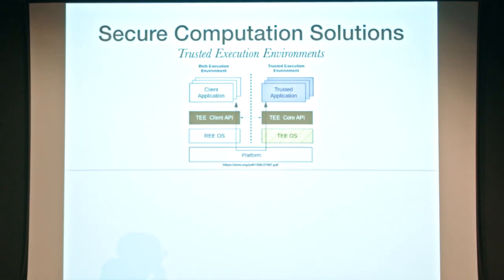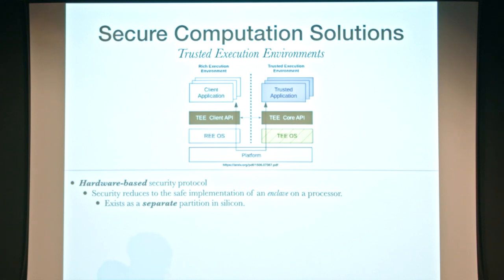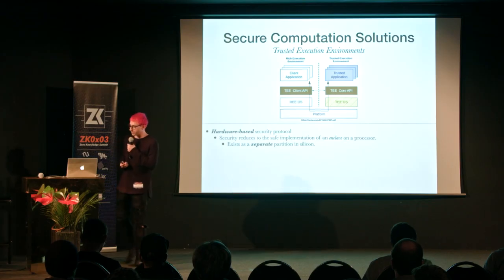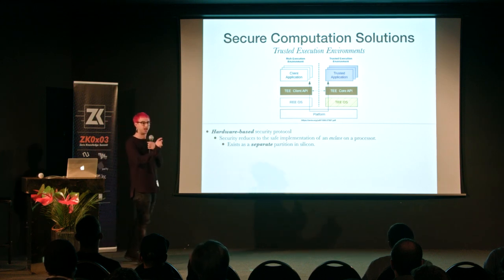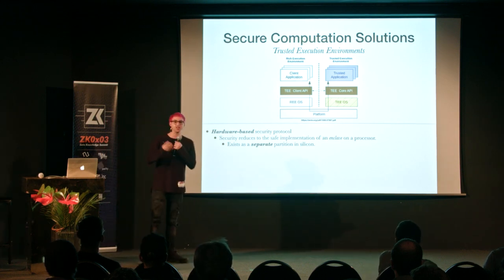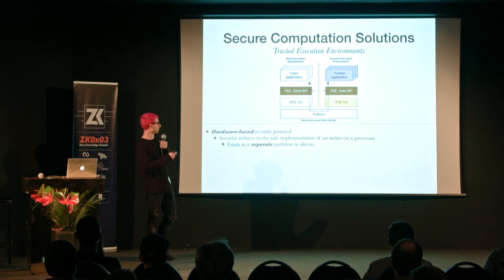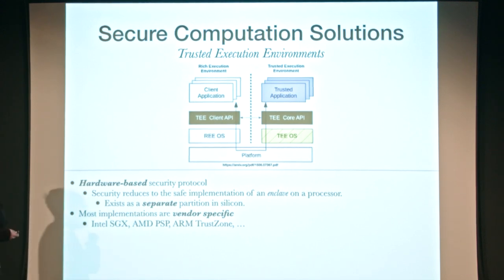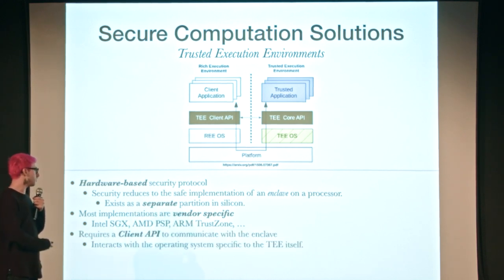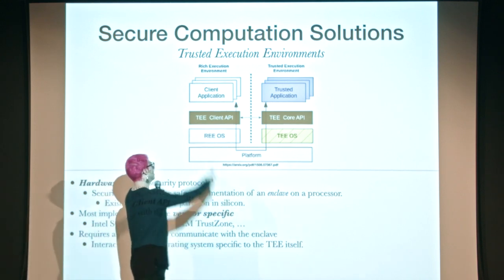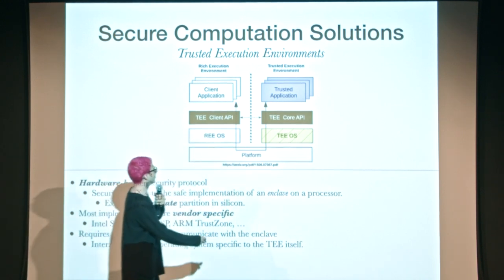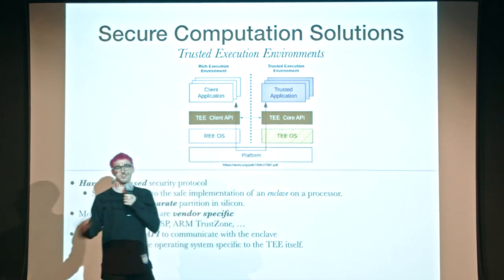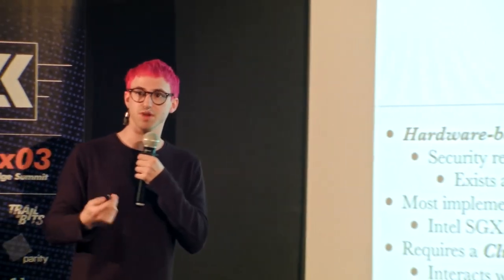In a trusted execution environment, there exists hardware — it's a hardware-based security protocol, which essentially means the security reduces to the safe implementation of an enclave, a specific dedicated part of a processor. It literally exists as a separate secure partition in silicon. Most implementations are vendor-specific — examples include Intel SGX, AMD PSP, and ARM TrustZone. It requires a client API to communicate with the enclave, which allows the application to be executed inside this secure part of the processor.